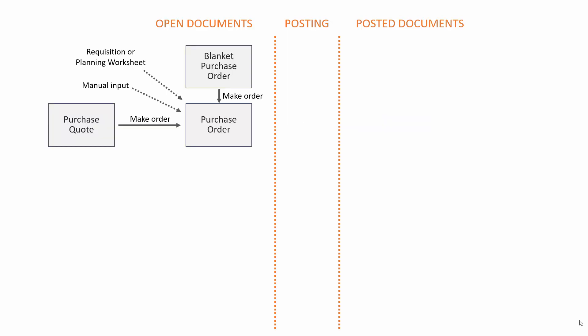On the open document side, we have a purchase order. A purchase order is where you can enter the quantity you want to buy from a vendor, quantities and prices. The purchase order also works together with the purchase quote and the purchase blanket order. From a purchase quote that you could send to the vendor, you can make a purchase order if you're actually going to order it. From a purchase blanket order, which is a frame agreement, you can make several orders each time you want to buy some part of the frame agreement. You could also enter the purchase order manually, or it could be created from the MRP batch job in the requisition worksheet or the planning worksheet. That's the normal way to create purchase orders.